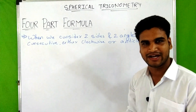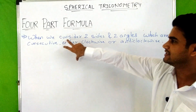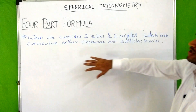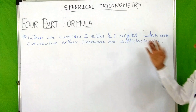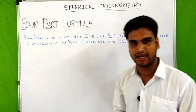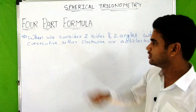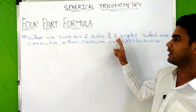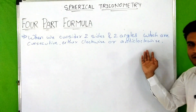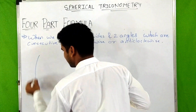When do we use the four part formula in spherical trigonometry? We use it when we consider two sides and two angles which are consecutive, either clockwise or anti-clockwise. So the condition for the four part formula is that we consider four parts of a spherical triangle — two sides and two angles — and they should be consecutive.